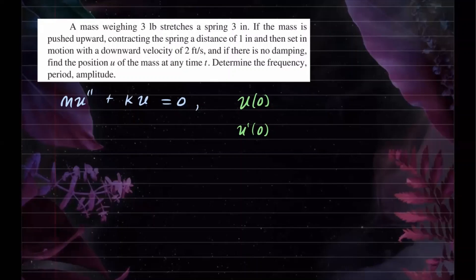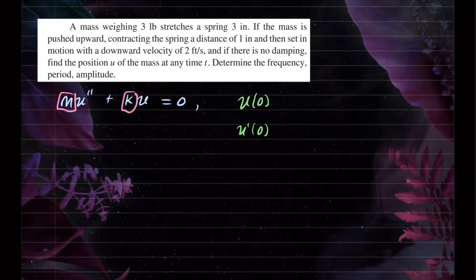Let's set up this problem. We have a mass weighing 3 pounds, stretching the spring 3 inches. If the mass is pushed upward contracting the spring a distance of 1 inch and set in motion with a downward velocity of 2 feet per second, and there's no damping, find the position U of the mass at any time T — and also the frequency, amplitude, and period. So we need to find coefficients M and K based on the given information. The weight W equals 3 pounds.